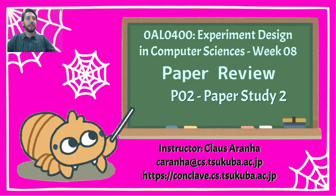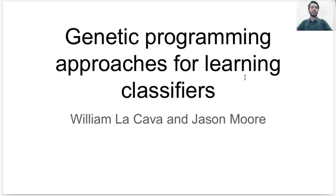Hello again everyone. Now we're moving to the paper review part 2, where we studied a new paper with a nice experimental section. This paper is called Genetic Programming Approaches for Learning Classifiers. They are creating programs to do classifiers that are fair, and it was proposed by William Laclava and Jason Moore.